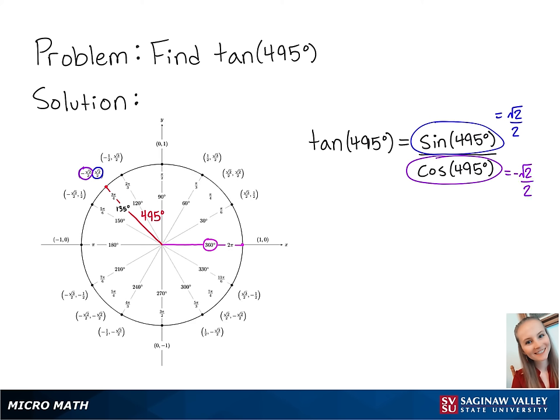So sine of 495 degrees over cosine of 495 degrees is equal to the square root of 2 over 2 over negative square root of 2 over 2.